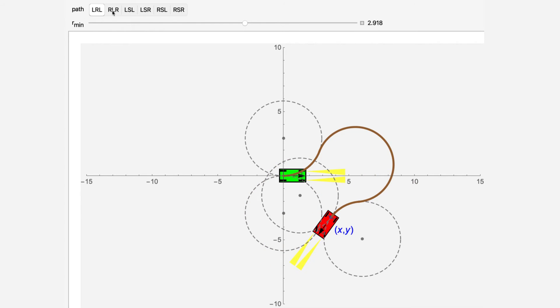LRL is brown, RLR is dark green, LSL is pink, LSR is blue, RSL is orange, and RSR is dark yellow.